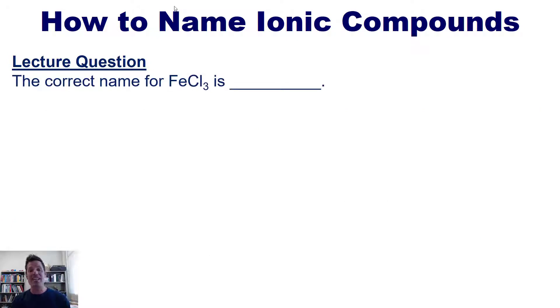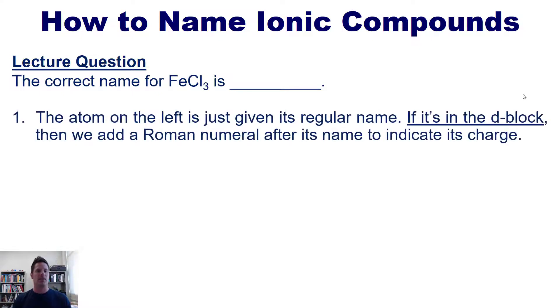The correct name for this compound is what? As per usual, we cover this by going through our rules. One, the atom on the left is just given its regular name. Now if it's an element in the D block, which this element iron, which has the elemental symbol Fe, is, then we also have to add a roman numeral after its name to indicate its charge. Now you might look at iron and ask, what charge is it? How do we determine that?